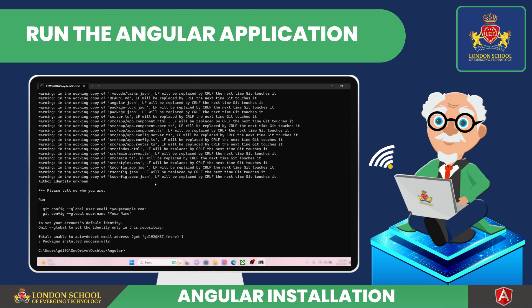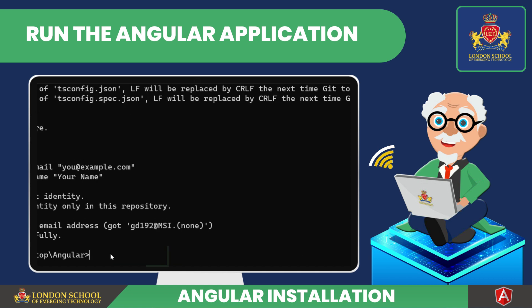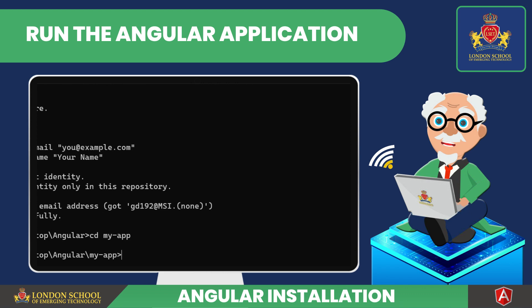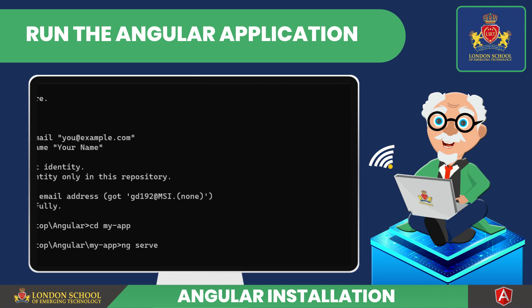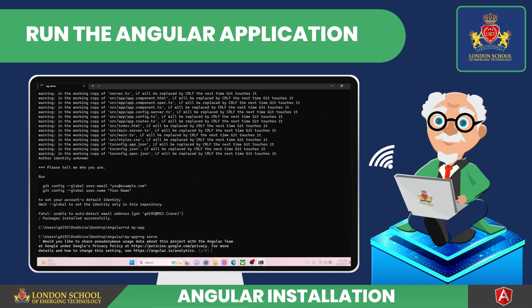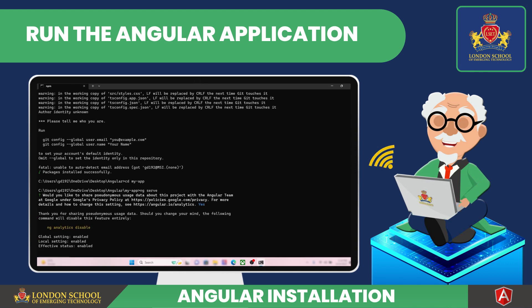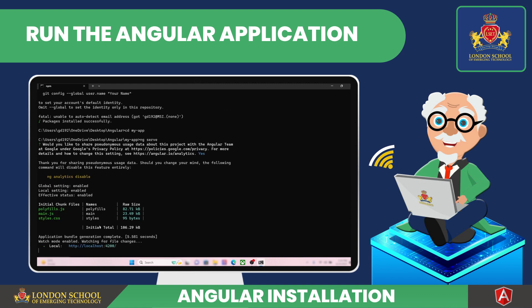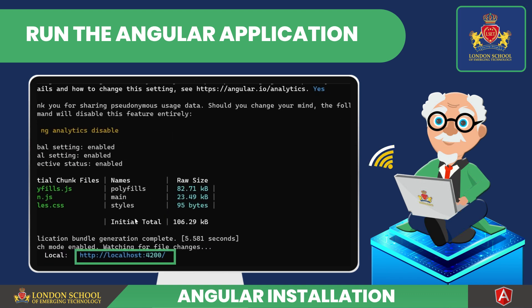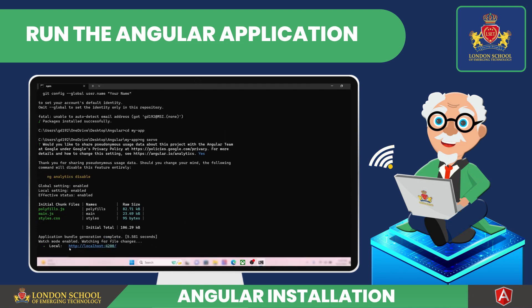The fifth step is to run the Angular application in your browser. Using the cd command, navigate to the newly created directory where your new Angular application will be tested: cd my-app. Run the following command to start the development server: ng serve. This command compiles your Angular application and starts a development server. Press Y for yes and enter. The server runs on port 4200 by default. Navigate to http://localhost:4200 using your preferred web browser. Your new Angular application should appear in the browser.